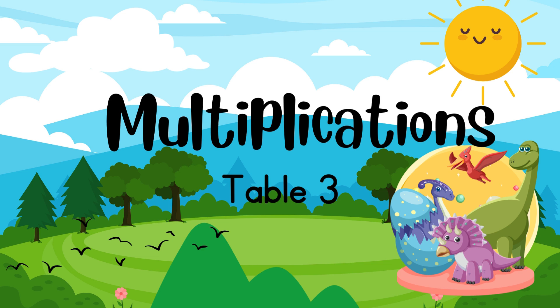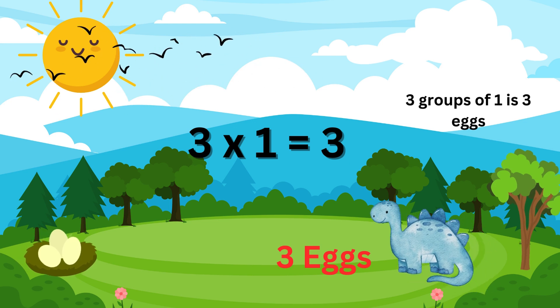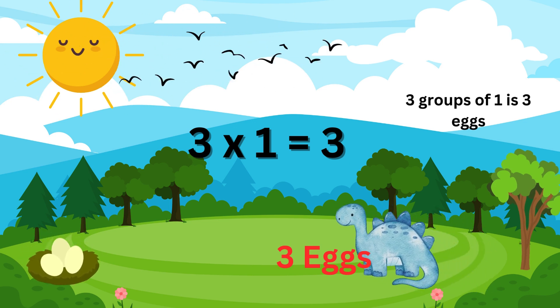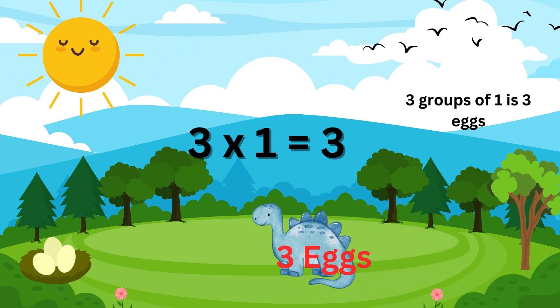Multiplications of 3. 3 times 1 is 3, they are 3 eggs.